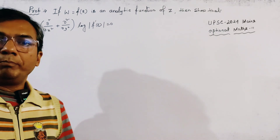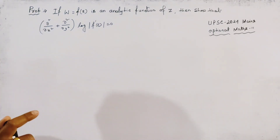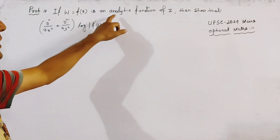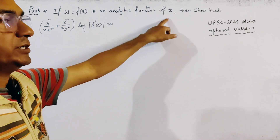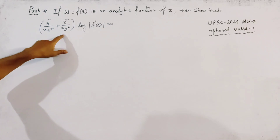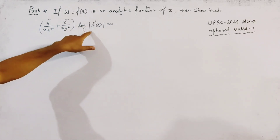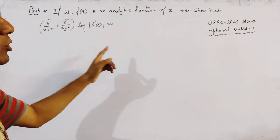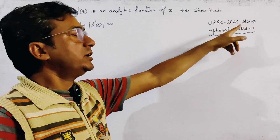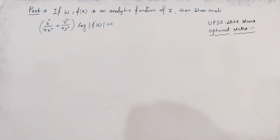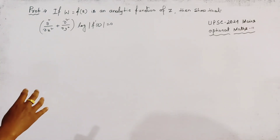Today's problem is from complex analysis: if w equals f(z) is an analytic function of z, then show that (∂²/∂x² + ∂²/∂y²) log|f'(z)| = 0. We have to prove this. This problem is from UPSC May 2024 optional mathematics paper 2. It is a very important problem from the chapter on analytic functions.